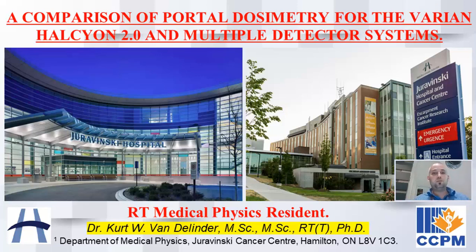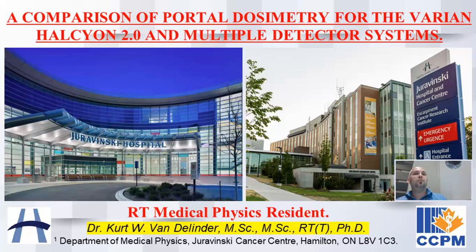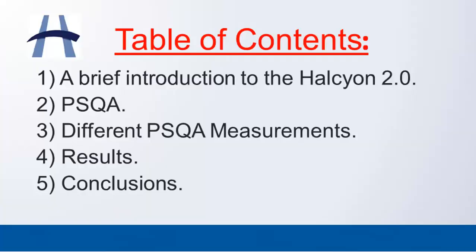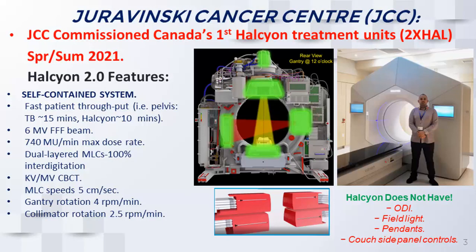Hello everyone, my name is Kurt Van Linder and I'm a medical physics resident here at the Juravinsky Cancer Center, or JCC for short. Today I'm going to be talking about a comparison of portal dosimetry for the Varian Halcyon 2.0 with multiple detector systems. I'll give a brief introduction to the Halcyon, talk about patient-specific QA, discuss some of the different measurements we performed, showcase the results, and then give conclusions.